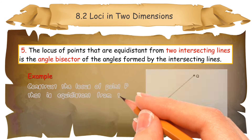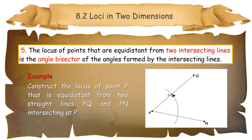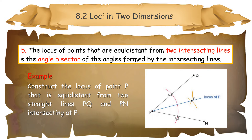Example: construct the locus of point P that is equidistant from two straight lines PQ and PN intersecting at P. By using a pair of compasses, draw an arc from point P which cuts through the straight lines PQ and PN. Mark the points of intersection between the arc and the straight lines PQ and PN as A1 and A2 respectively. Construct intersecting marks from A1 and A2. Draw a straight line joining the intersecting marks constructed and point P.